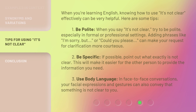When you're learning English, knowing how to use 'it's not clear' effectively can be very helpful. Here are some tips. Tip 1 — Be polite: when you say 'it's not clear,' try to be polite, especially in formal or professional settings. Adding phrases like 'I'm sorry, but...' or 'Could you please...' can make your request for clarification more courteous.